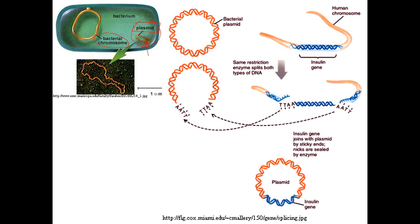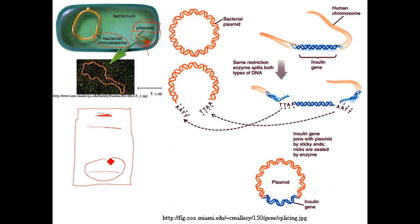What we're interested in retrieving from the bacteria is that plasmid. If we rupture the cell membrane and do gel electrophoresis, the large bacterial chromosome stays near the top while the smaller plasmids zip through the gel, allowing us to retrieve the plasmid. We then cut it with a restriction enzyme — such as BamHI — which generates overhanging sticky ends.